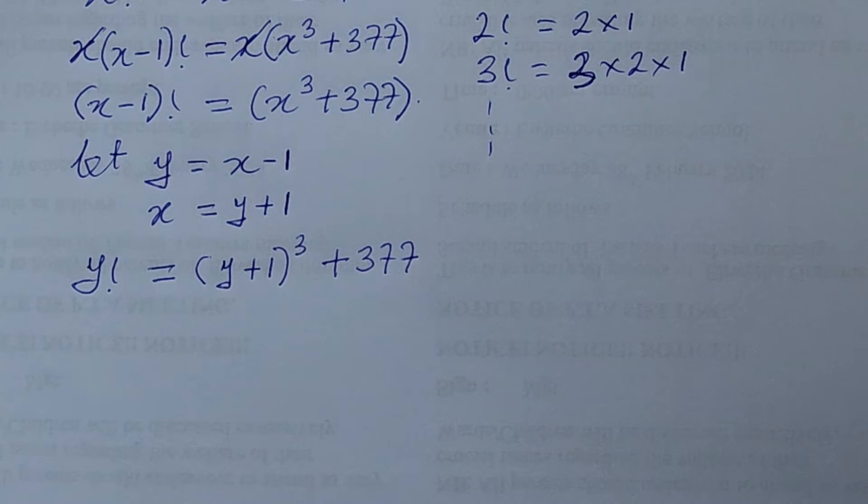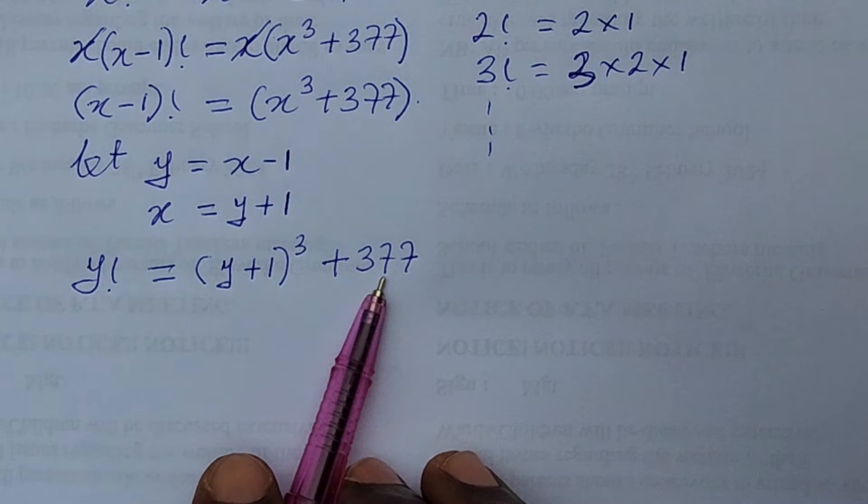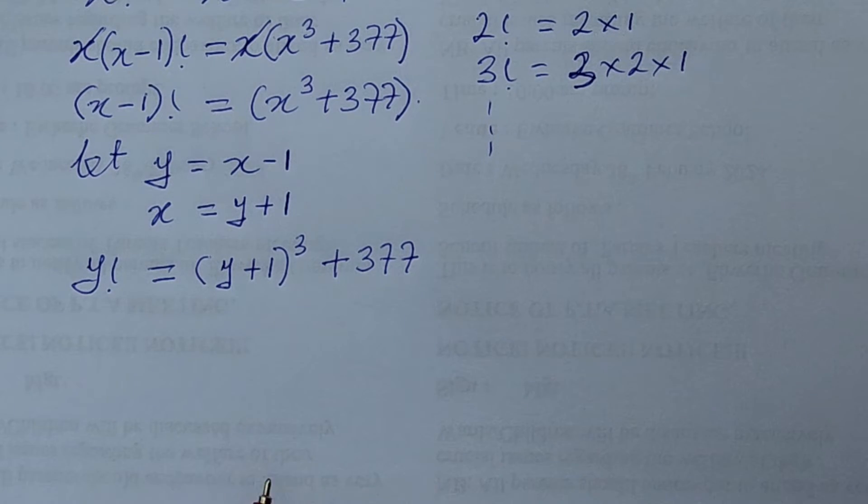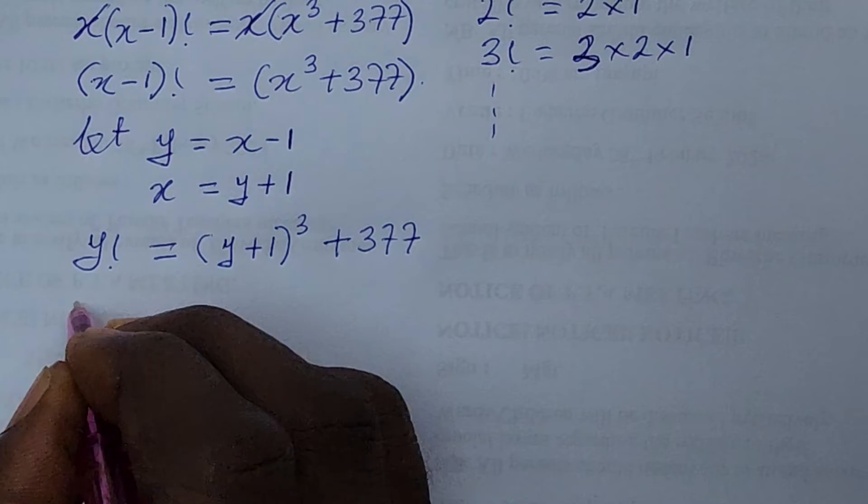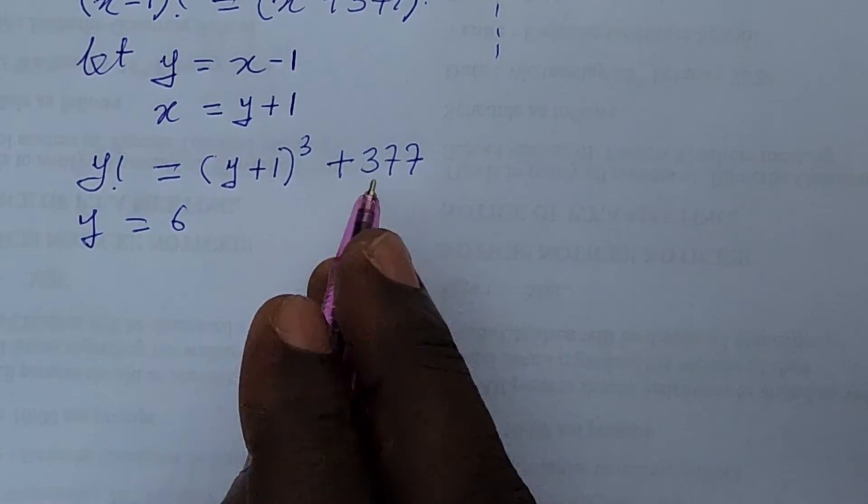So all we need to do is to put 6 here add 1 to it to give us 7. So we now have 7 to the power of 3 and that will give us 343 and we add this to 377 will give us 720. Okay so using the trial and error method this will give us here your y is equal to your 6. So we can confirm that from here.